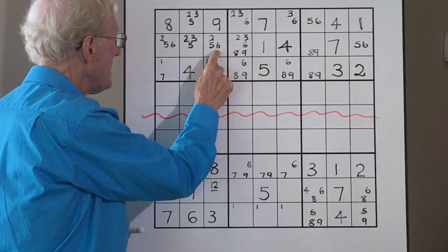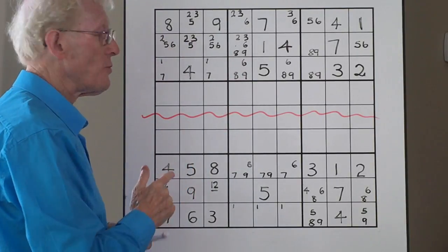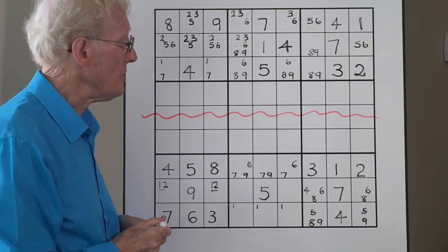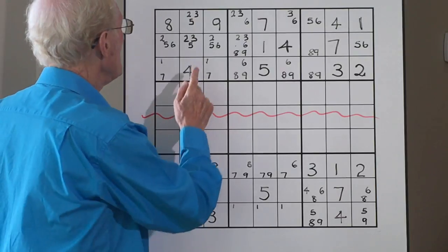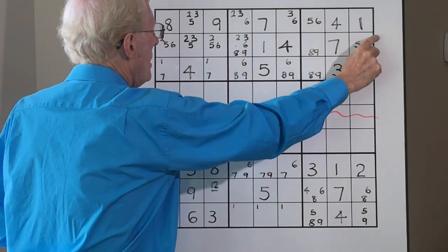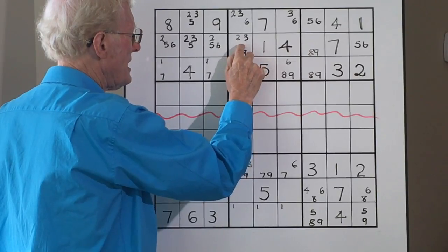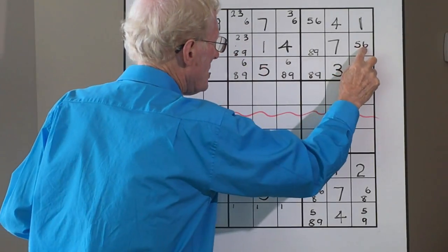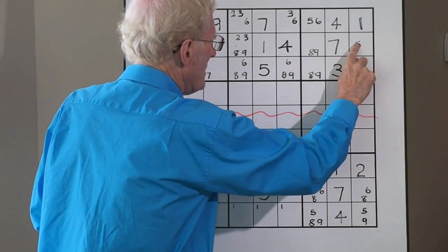The first thing I noticed was in this block here we have a six here and a six here, and that's the only place you can find a six in that block. This means we can use the rule of exclusion, which means that we can get rid of the sixes along this row. So we get rid of that six and we can get rid of this six.